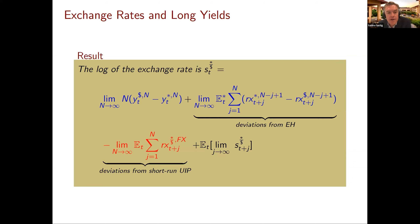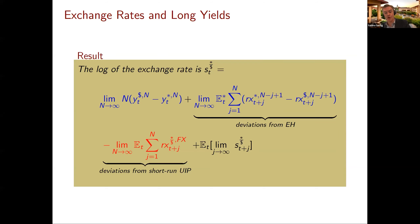Plus the difference in bond risk premia — labeled as deviations from the expectations hypothesis. And then there's the third term — deviations from short-run UIP — which we had before. The last term converges to the unconditional mean if the exchange rate is stationary. So we now have a relation between exchange rates and long yields. The dollar appreciates when long yields at the long end of the yield curve go up relative to foreign yields — that's like the cash flow component becoming more appealing for a foreign investor.